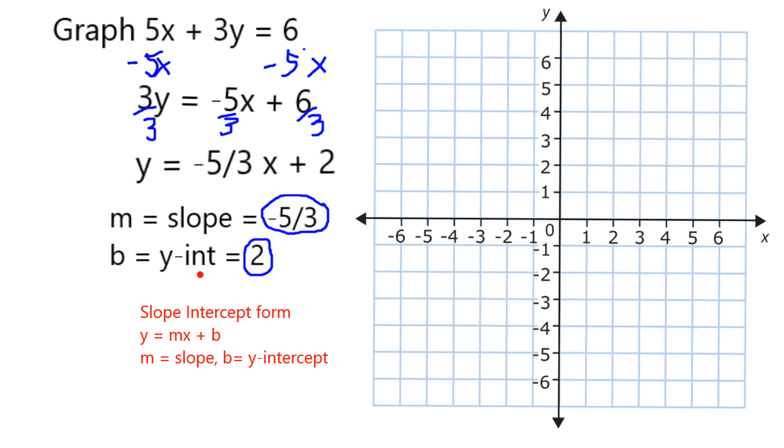Starting with the fact that my y-intercept is 2, that means my graph crosses the y-axis at precisely the point 2. So I'm going to first put my first point on the graph here where x is 0 and y is equal to 2.